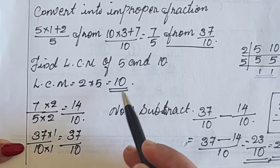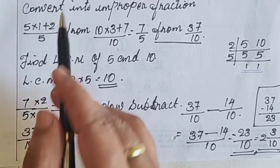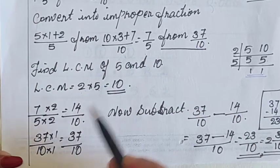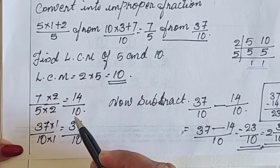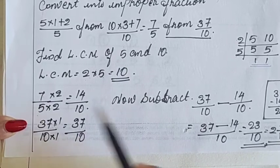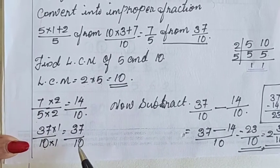Now convert those fractions into like fractions. These are not like. This fraction is not in like fraction. Like fraction means what? The denominators should be same. That time we can call those fractions are like fractions. So convert this 7 by 5 into like fraction and 37 upon 10 also convert into like fraction.